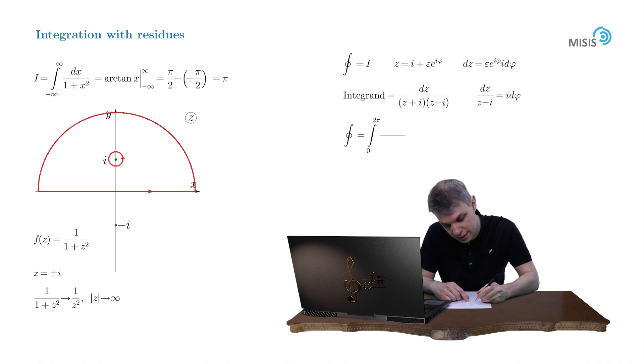0 to 2 pi, i d phi over 2i plus epsilon times e to i phi. But epsilon is tending to zero. So we discard this epsilon term in the denominator and obtain one half of the integral of d phi, which is again equal to pi.